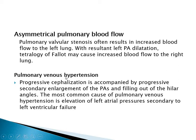Pulmonary venous hypertension: there will be progressive cephalization and progressive secondary enlargement of the pulmonary arteries and filling out of the costophrenic angles. The most common cause of pulmonary venous hypertension is elevation of the left atrial pressure secondary to left ventricular failure.